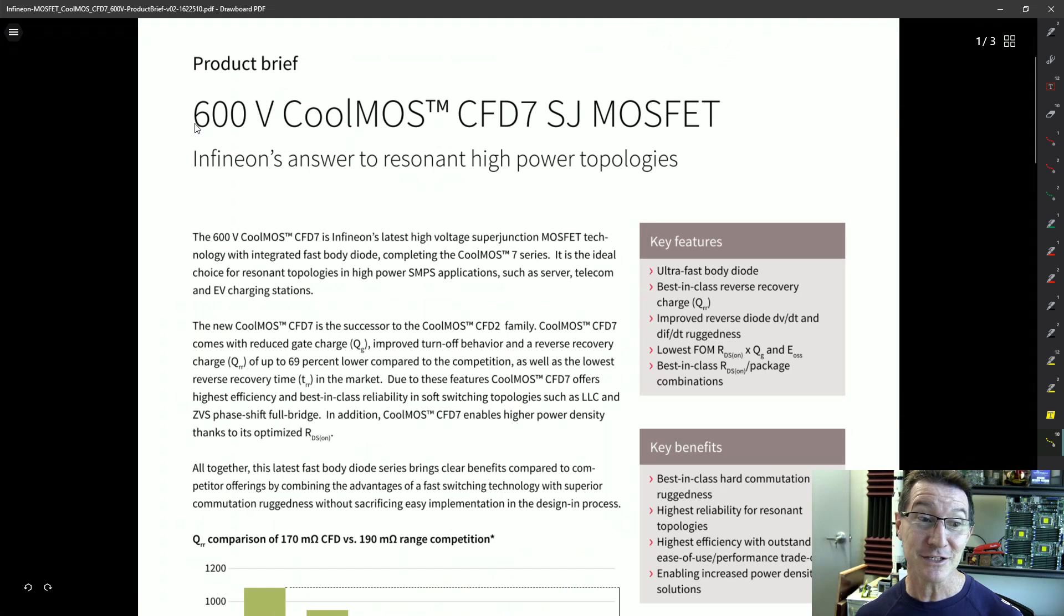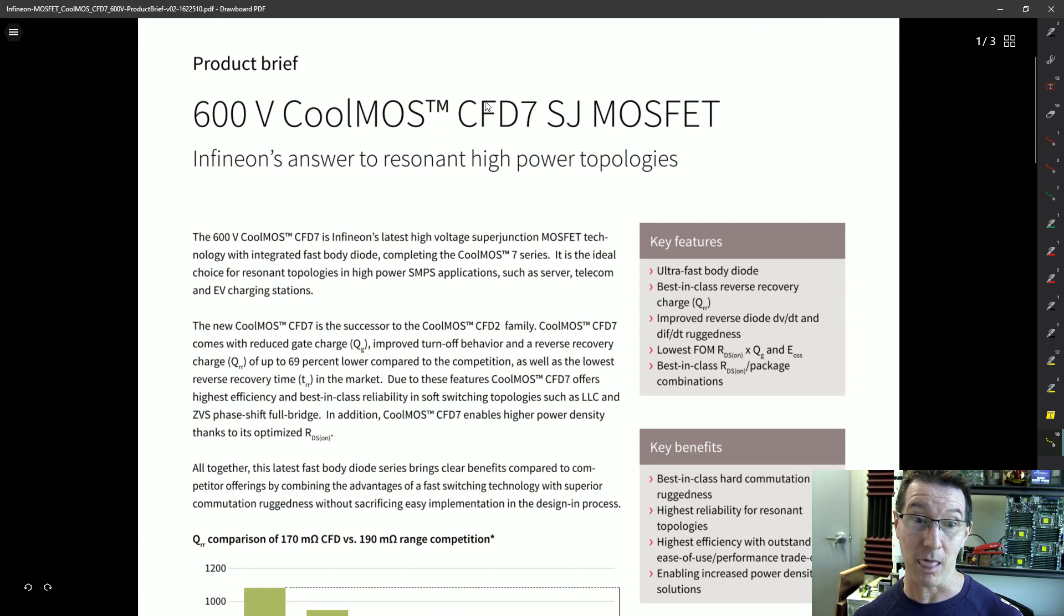And those MOSFETs that we saw under there. Surprise, surprise. Look at this. 600 volts CoolMOS. A little CFD7 for those playing along at home. SJ MOSFET. Infineon's answer to resonant high power topologies. Bingo! We got it.